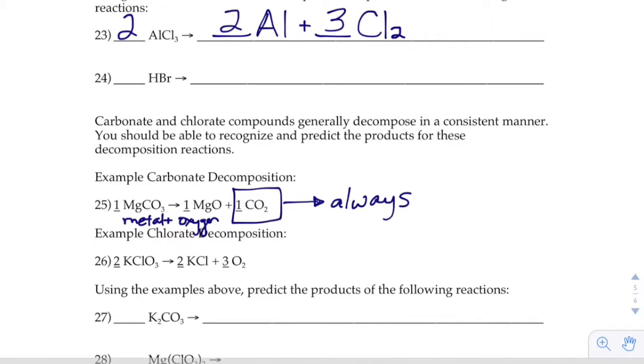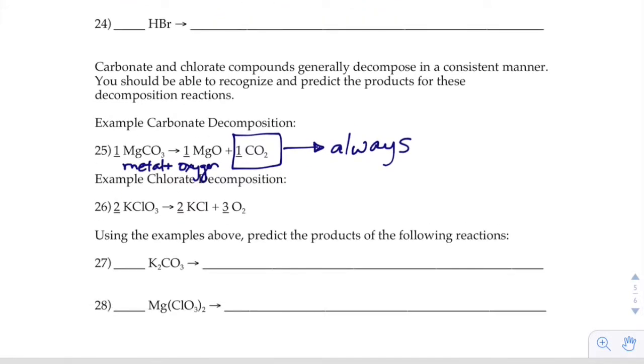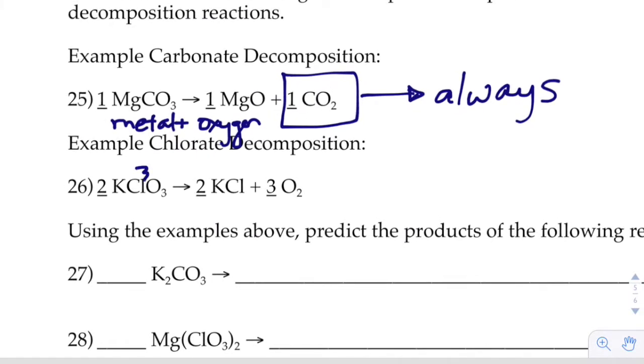For chlorates, when those guys decompose, the divorce always happens in a chlorate between the Cl and the O. That's where they get divorced. So, the oxygen goes off by itself, and then the chlorine stays with whatever metal is there. So, you'll always get oxygen as a product, and then chlorine stays with whatever metal is there. So, you'll get metal plus chlorine, whatever. That's your other guy. That's what you get.